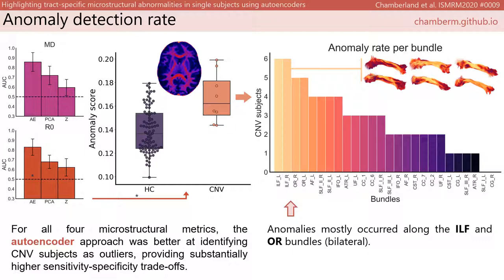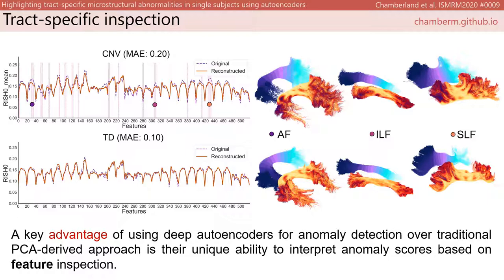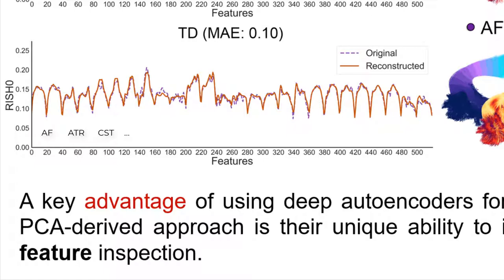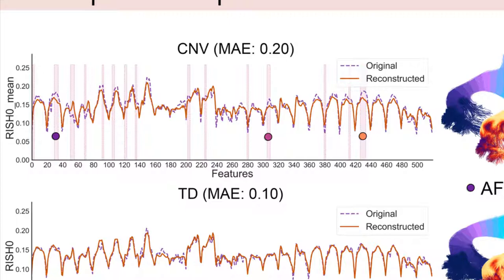A key advantage of using a deep autoencoder for anomaly detection over traditional PCA-based approaches is their unique ability to interpret anomaly scores based on feature inspection. If we look at a typically developing child, the overall reconstructed features match the input, which testifies that the autoencoder learned what a healthy representation should look like. In the CNV subject, we see various discrepancies highlighted along multiple tracts, assessed using a permutation approach. The difference between the two can then be further interpreted in the context of tissue microstructure.